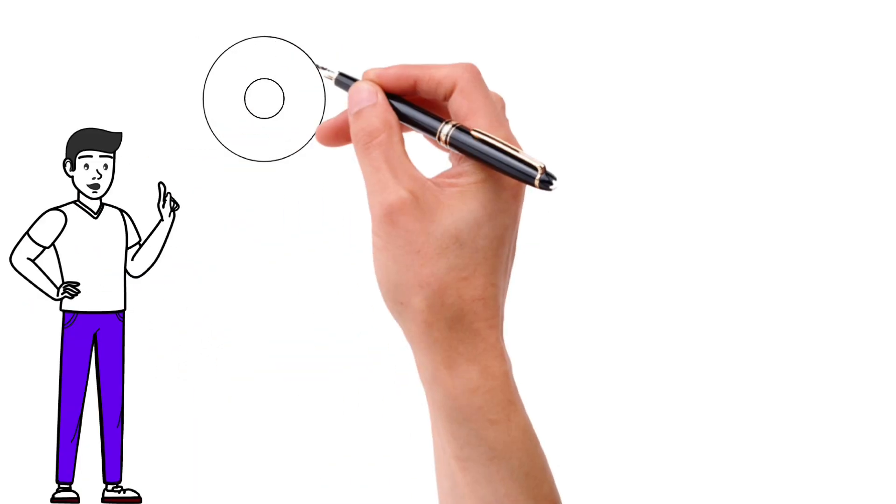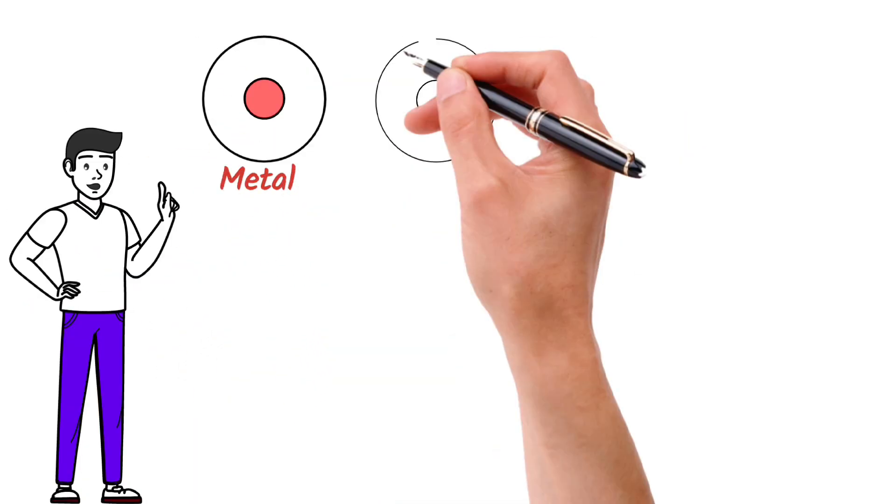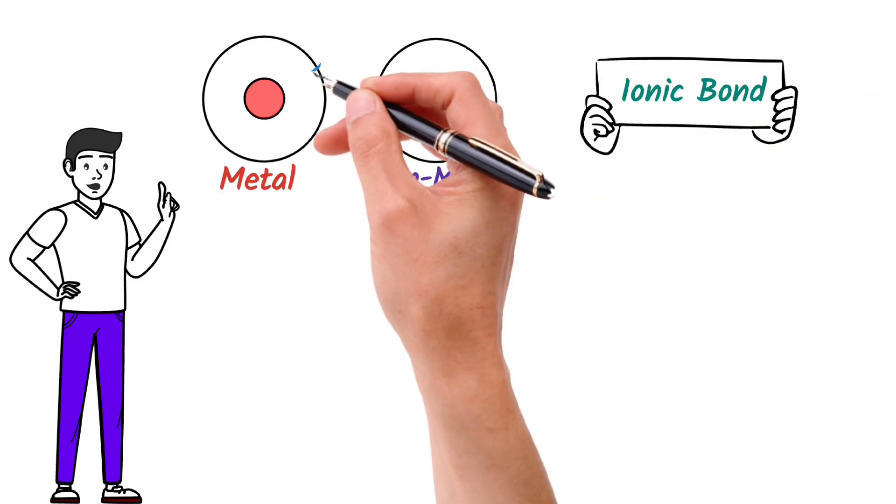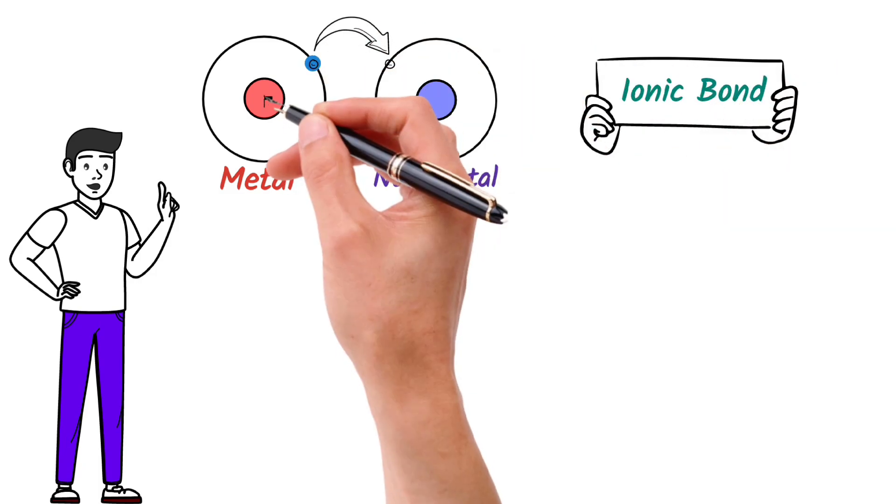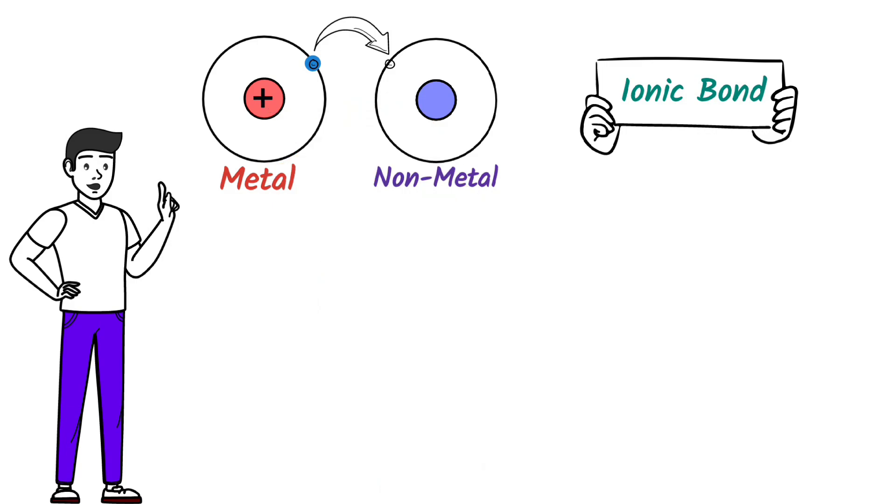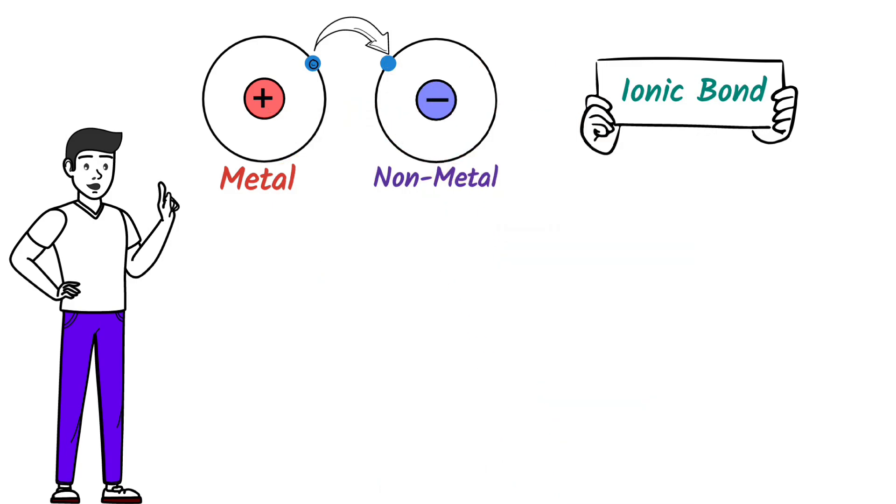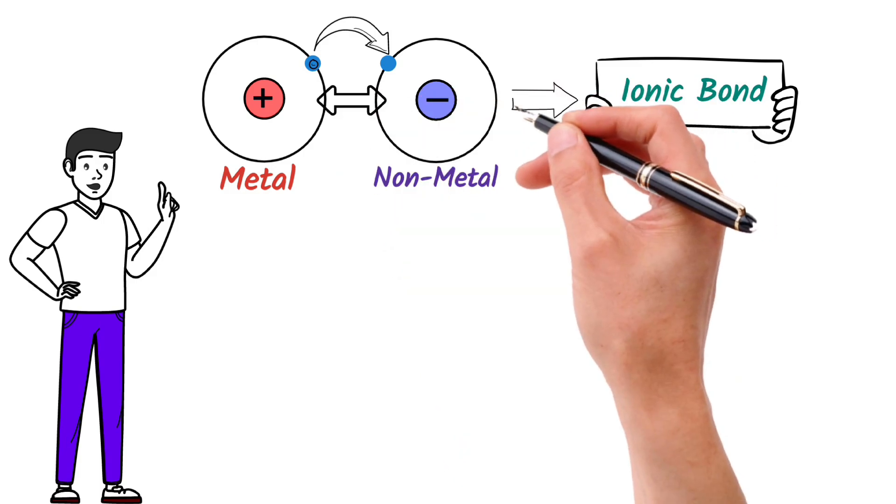Remember that when a metal and a non-metal come together, they form an ionic bond. In ionic bonding, the metal atom loses electrons to become a positively charged ion, while the non-metal gains those electrons to become a negatively charged ion. These opposite charges attract each other, creating a strong bond known as an ionic bond.